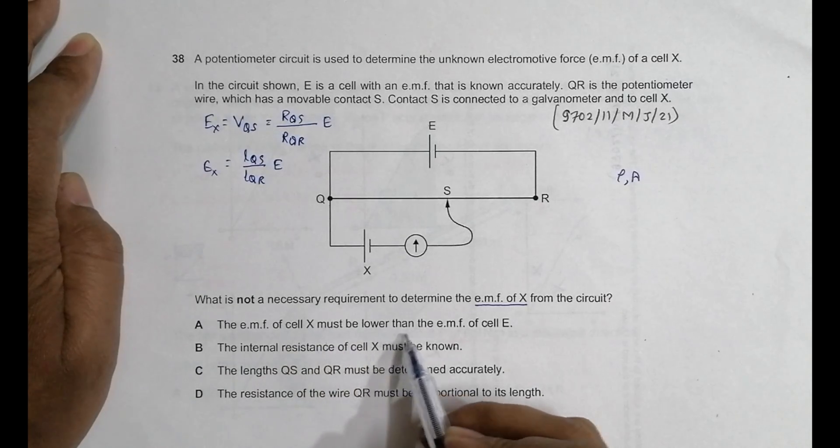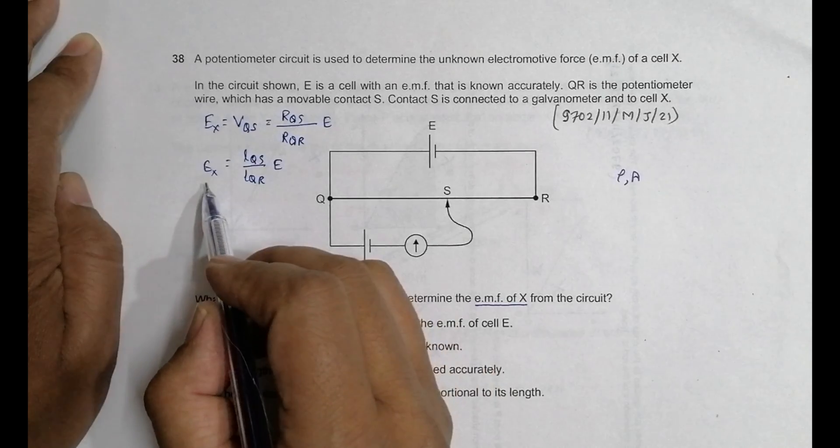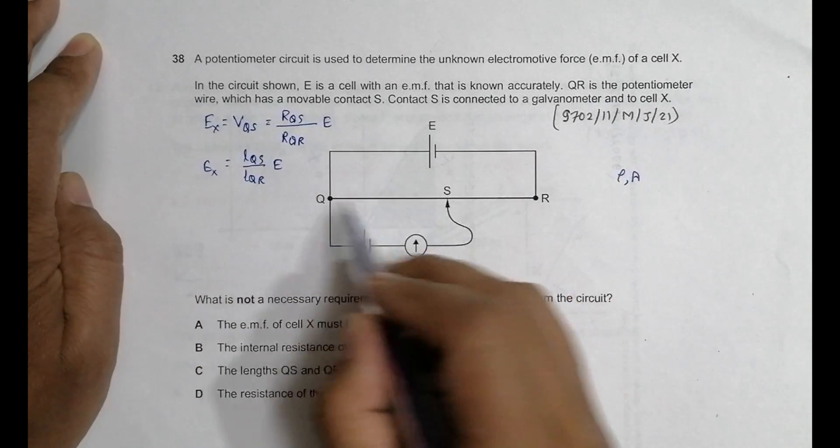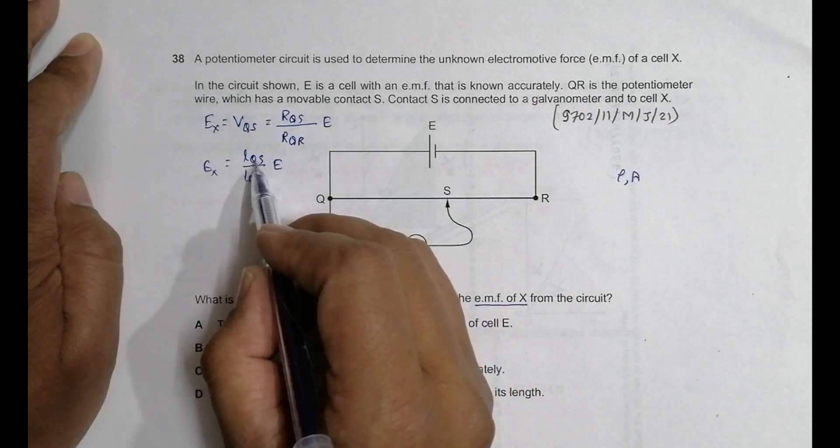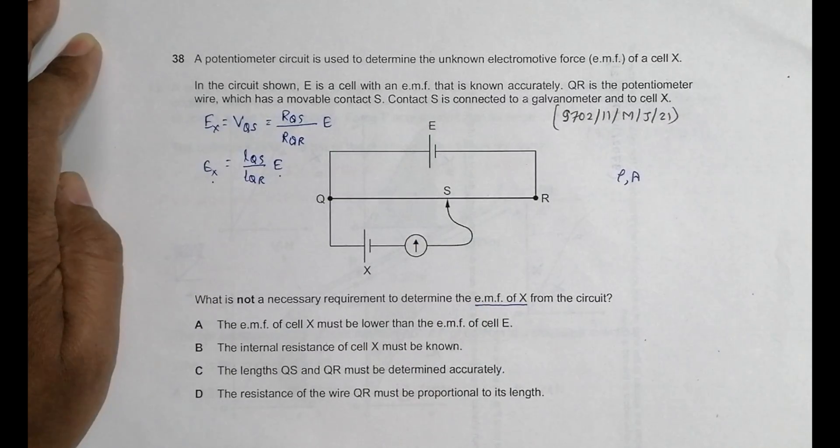The EMF of cell X must be lower than the EMF of cell E. So to determine this EX, as we can see from here, since this QS is definitely less than QR, LQS is less than LQR, EX should be less than E.